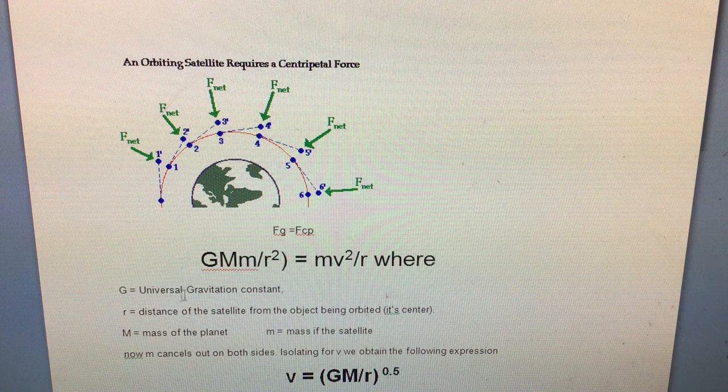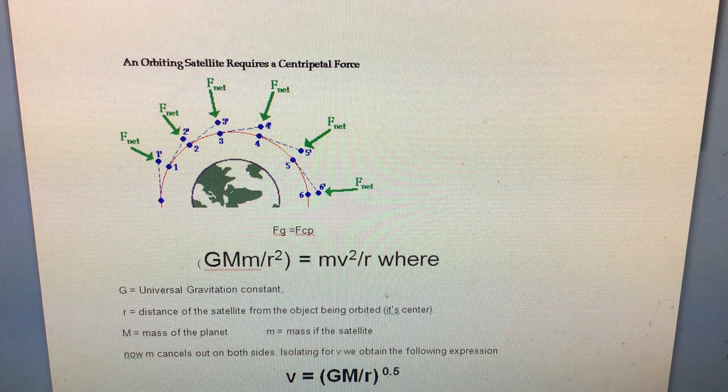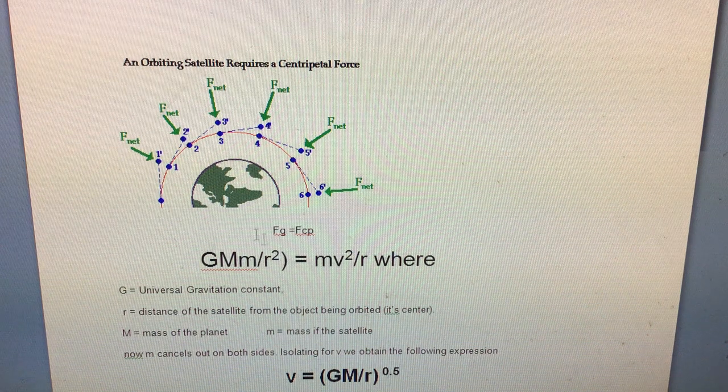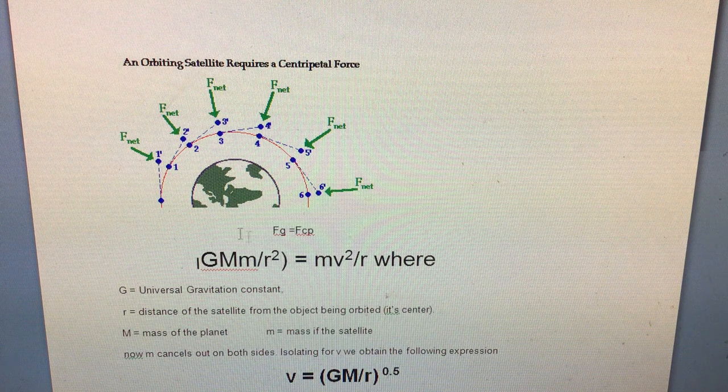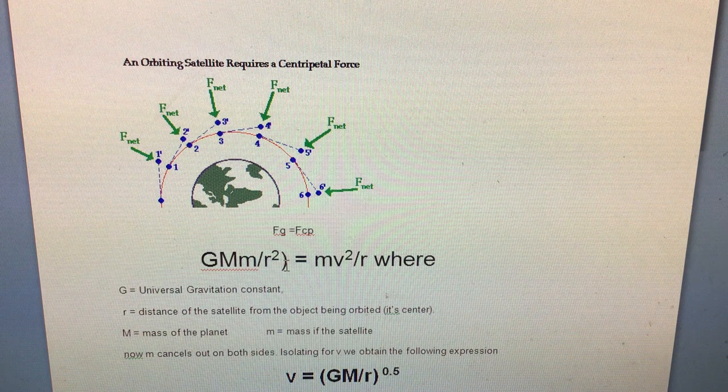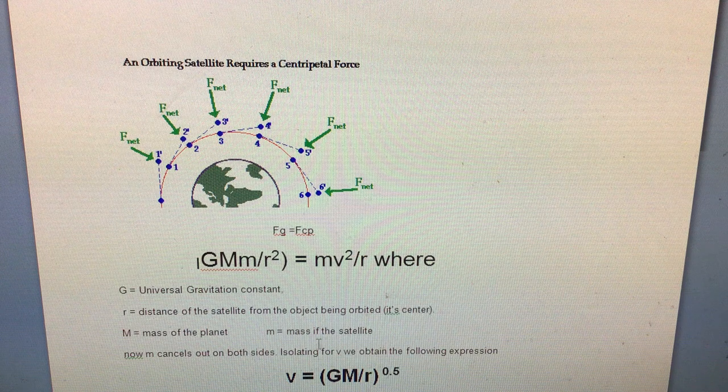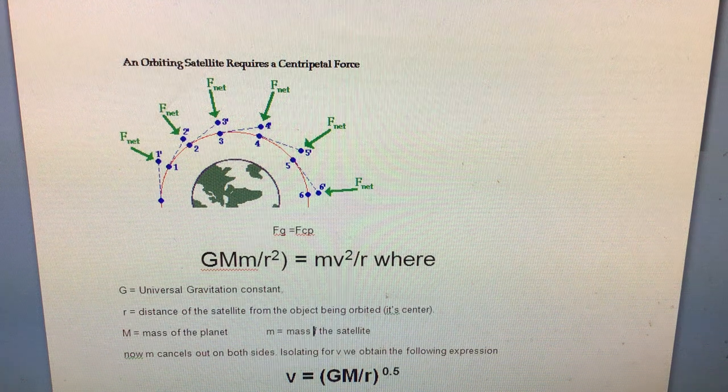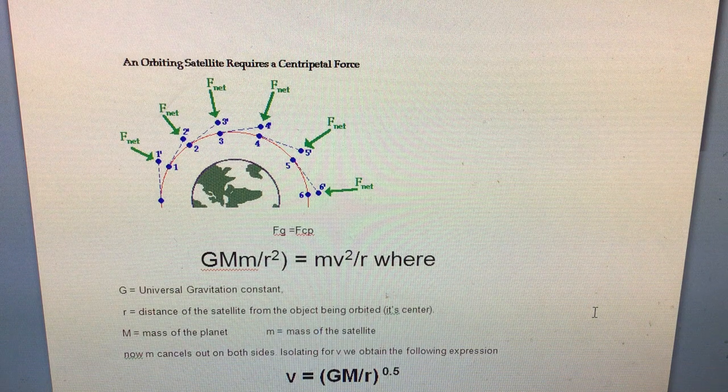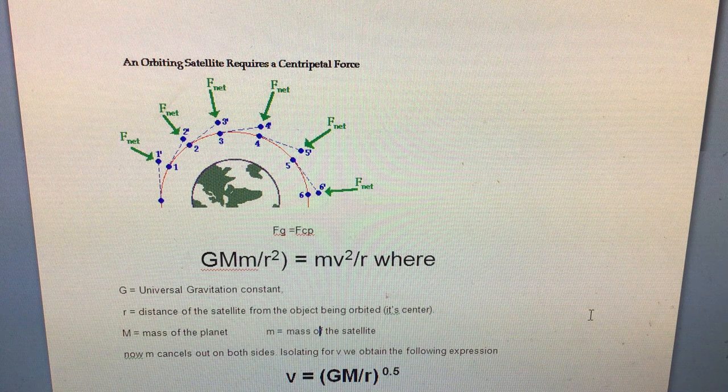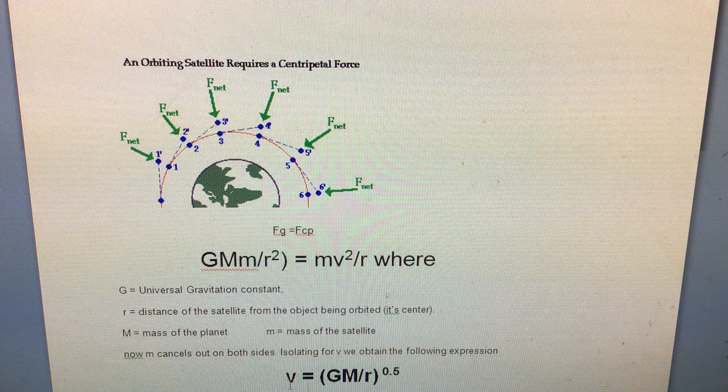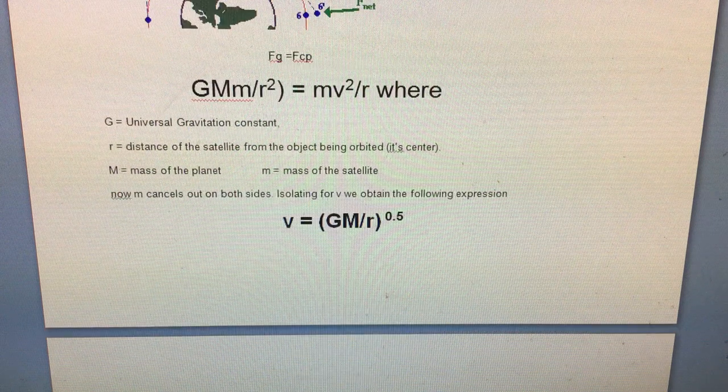So if you equate Newton's law of universal gravitation and you say that is actually supplying the centripetal force, which is mv squared over r, if you equate those two, you can cancel out little m, which is the mass of the satellite. Our big M stays there. We then rearrange this equation and we solve for v.